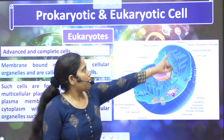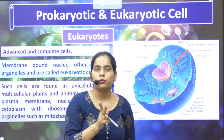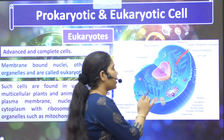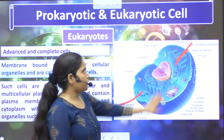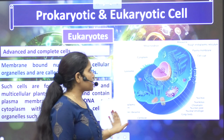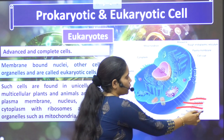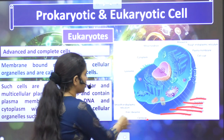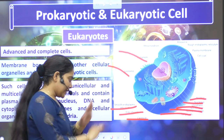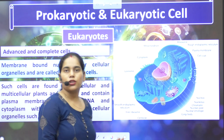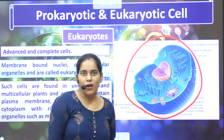Looking at the eukaryotic cell diagram, we can see: cytoplasm, mitochondria, ribosome, rough endoplasmic reticulum, smooth endoplasmic reticulum, plasma membrane, cell coat, nucleus, nucleolus, chromatin, nuclear pore, nuclear envelope, Golgi body, centriole, free ribosome, lysosome, and cytoplasm. There are so many things in one complete cell — what do we call it? A complete cell or advanced cell.